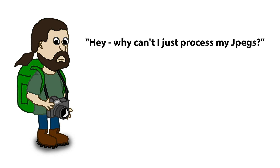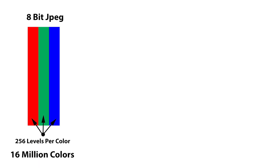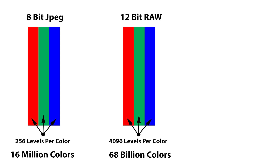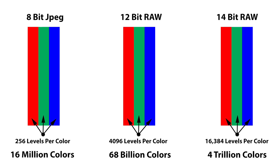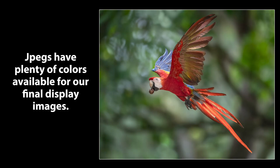So this begs the question: why can't we just process the JPEG instead? Why do we need the raw file at all? JPEGs simply don't have all the information from the sensor — raw files do. Our 8-bit JPEGs have 256 brightness levels per RGB channel, for a total of just over 16 million colors. That seems like a lot, but a 12-bit raw file has 4,096 brightness levels per RGB channel for 68 billion colors, and 14-bit gives us 16,000-plus brightness levels per channel for a total of 4 trillion colors. Our eyes can only see about 10 million colors, so the 16 million in JPEGs is plenty for display images.